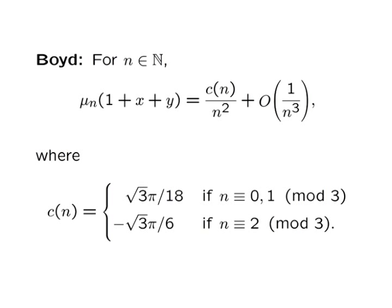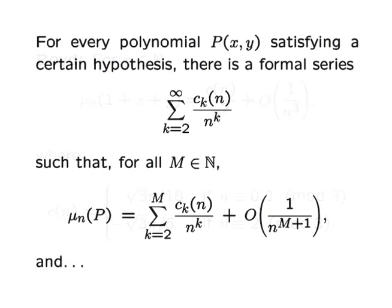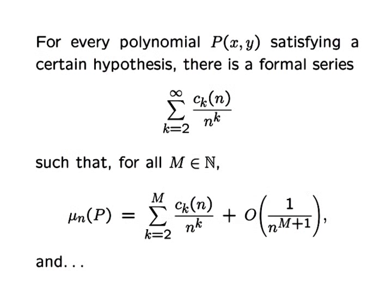Motivated by this example, and guided by some of the ideas in its proof, I was able to extend this result, providing an asymptotic series expansion for mu sub n of p, not just for this polynomial, but for all two variable polynomials that satisfy a certain, not very restrictive hypothesis. This expansion looks sort of like a power series, except that it uses powers of 1 over n, not n, and that the coefficients are not constants, they're a special type of bounded function of n.